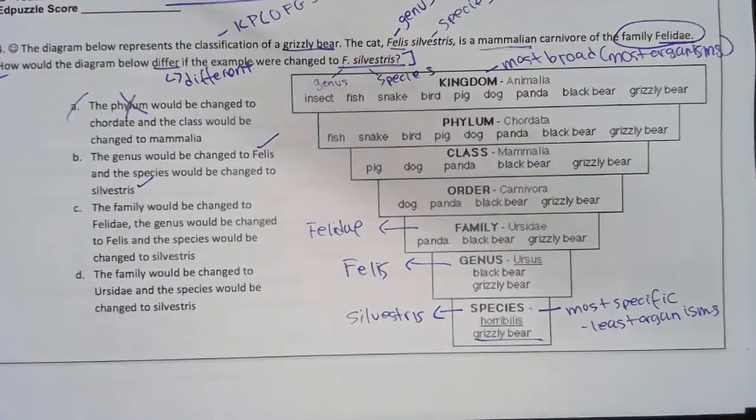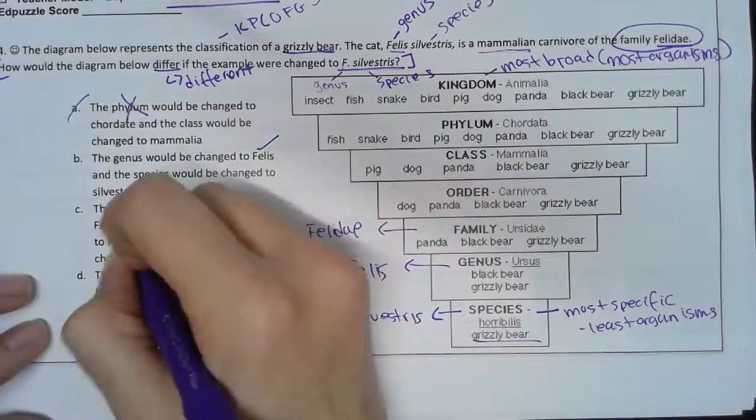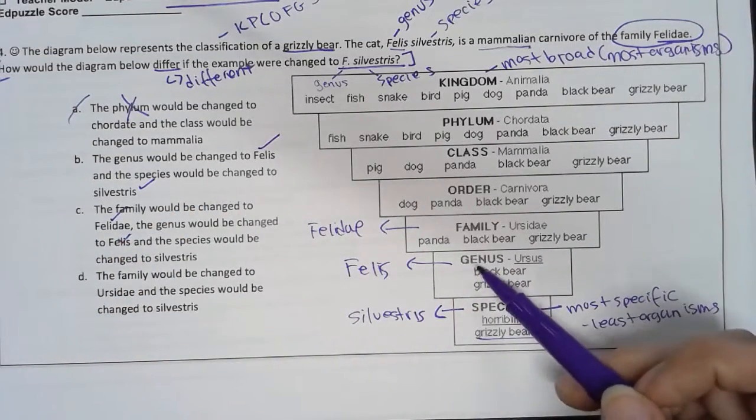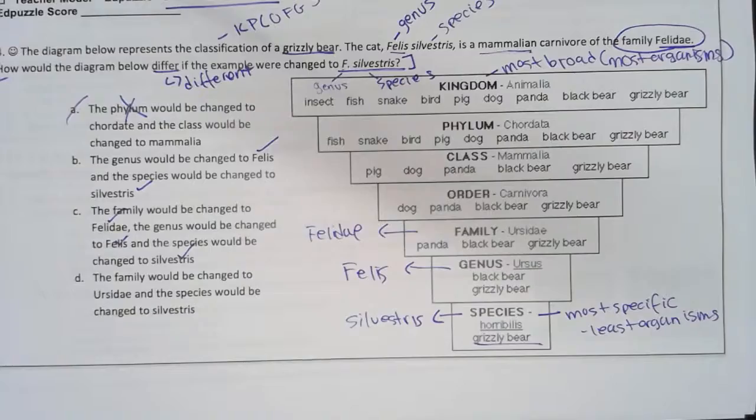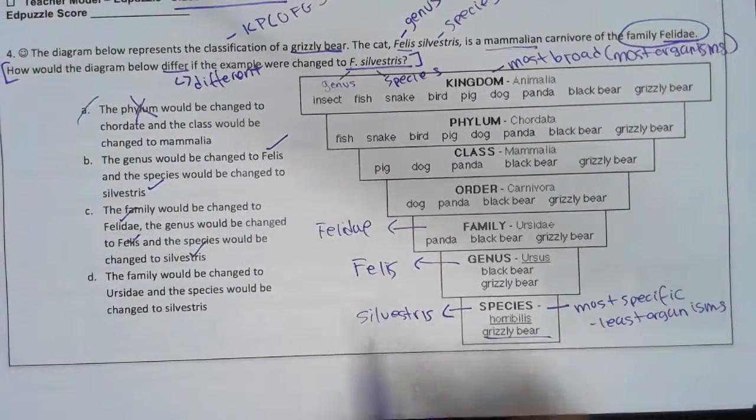But that's only two of my three things, so I'll leave it. Option C: 'The family would be changed to Felidae' - absolutely. 'The genus would be changed to Felis' - yes. 'The species would be changed to Silvestris' - oh my god, look at that, so beautiful! Let's check this last one just to make sure.